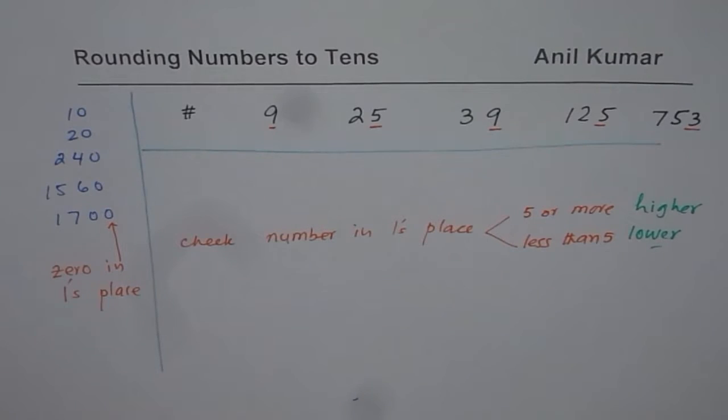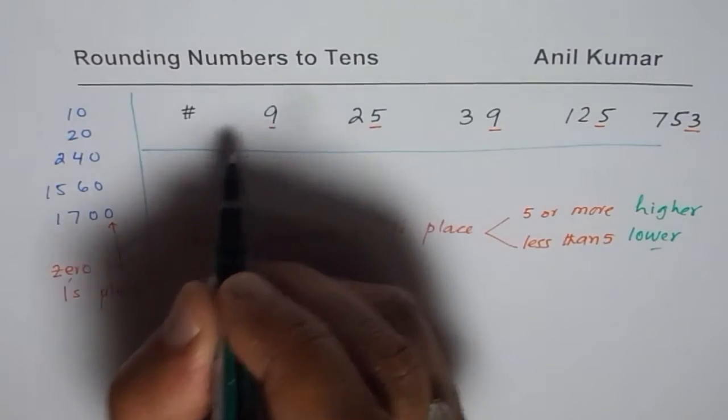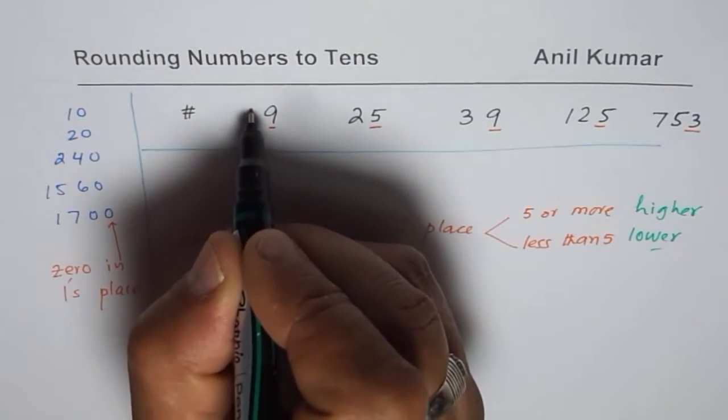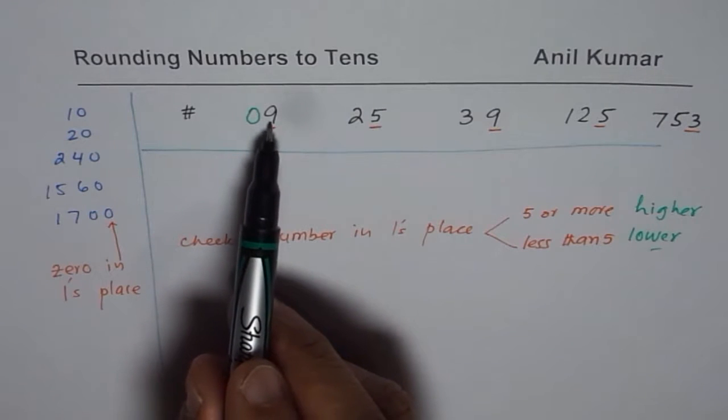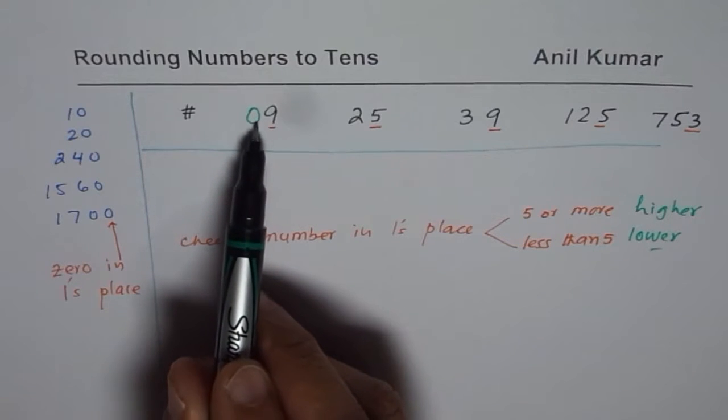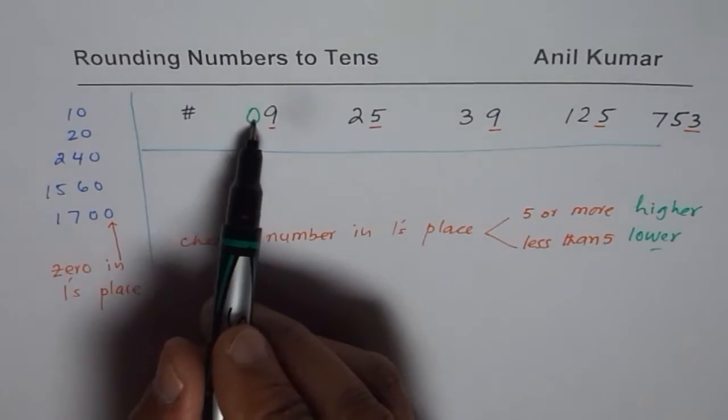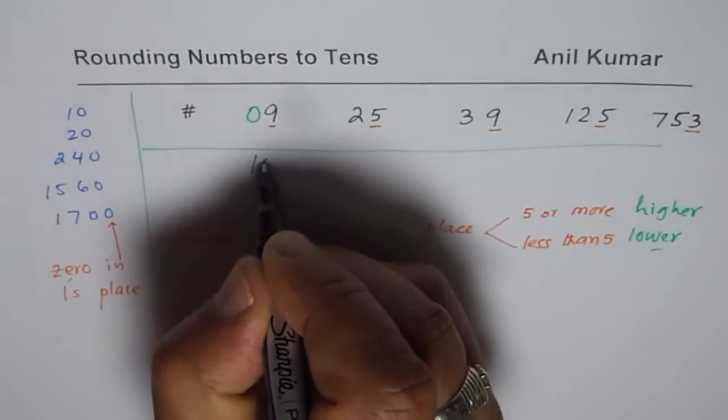So that is how you will do. So in this case, it is higher. This is one's place, tens place is 0. Remember that. So since this is higher, we have to round this higher. 5 or more, round it higher. So in tens place rounding, what will you get in this case? You will get 10. So the result is 10.